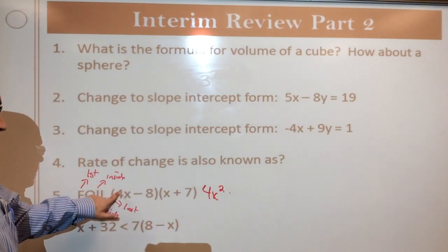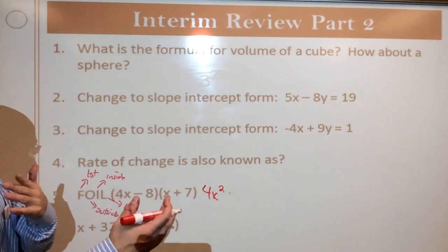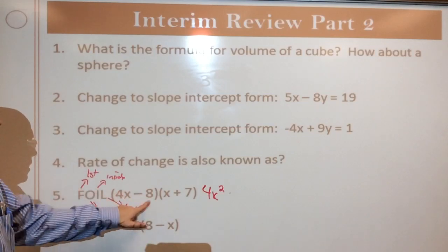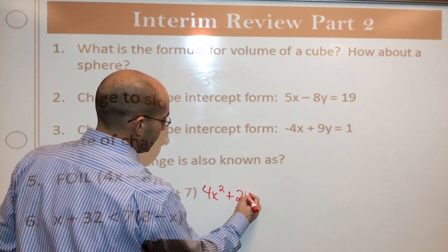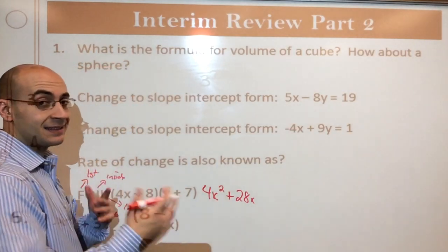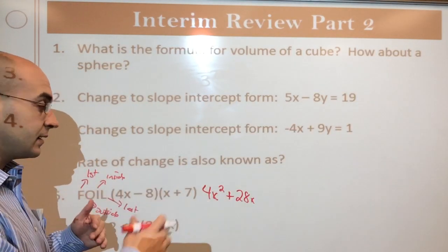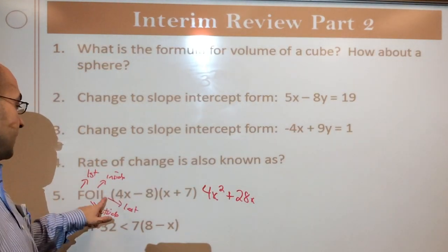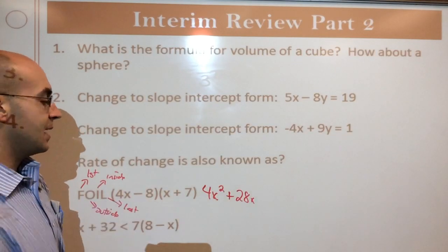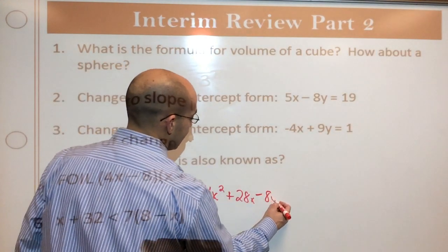Outside. So the O. The outside terms, right? So there's going to be like kind of geographical with this. 4x times 7. So that's going to be 28x. And remember, you can multiply anything together, right? It doesn't matter if it has an x or not. They don't have to be the same term. Inside is i. So the inside terms, that's a negative 8 times x. So that's negative 8x.